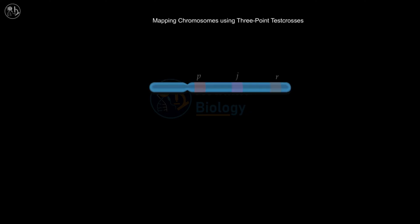Genes are located at specific positions on chromosomes, and their relative arrangement and spacing can be determined. The distance between genes is calculated based on the frequency of crossing over between them during meiosis. Genes that are closer together are less likely to undergo crossing over, while those farther apart are more likely. Three-point test crosses can determine the order of three genes on a chromosome and their relative distances.